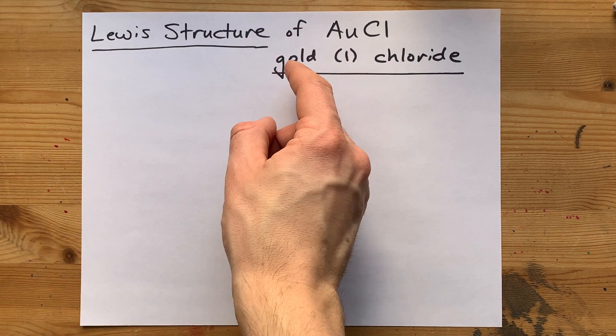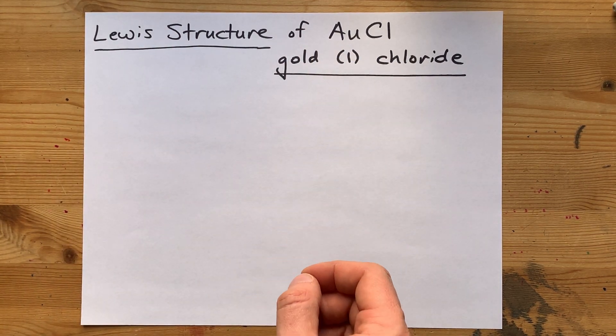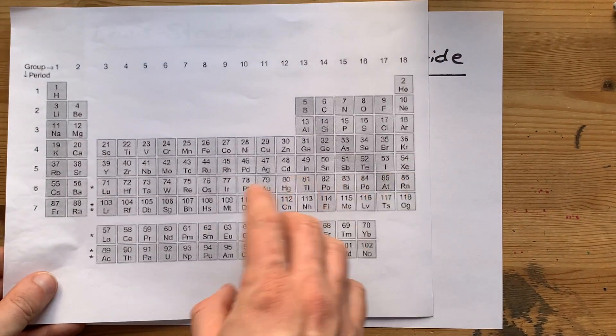Got asked for the Lewis structure of gold-1-chloride, which is gold, a metal.